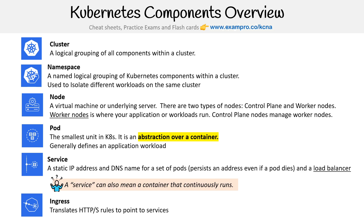Ingress is also not a great name, but that's what they gave it. Ingress is used to translate HTTPS rules to point to services. What we'll really see is that it's the hardest component we'll learn throughout this course, but it's used for getting an external load balancer — on AWS, GCP, or Azure — to route traffic to our pods.